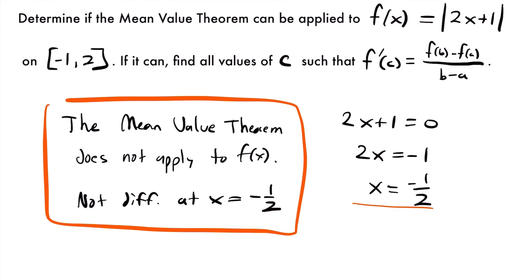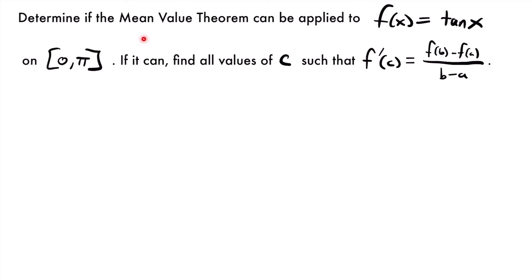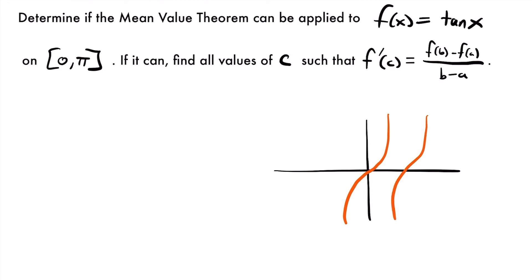Let's look at another example. Now we want to see if the mean value theorem can be applied to the function tangent x, which is one of our trig functions. In particular, we're looking at the interval from 0 to pi. The first thing we want to do is check the continuity and differentiability of our function. The tangent function, if we were to graph it, is going to be shaped with curves, and in between each curve is an asymptote. One of those asymptotes occurs at pi over 2.